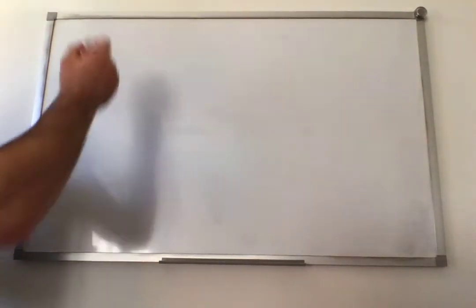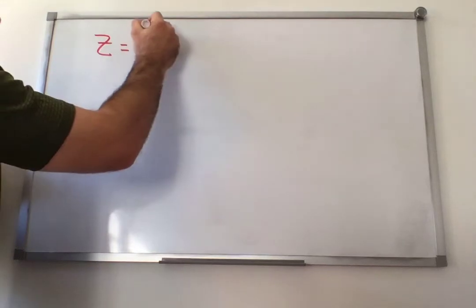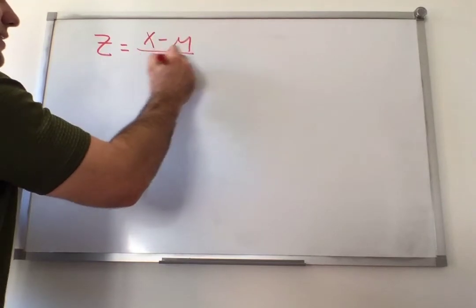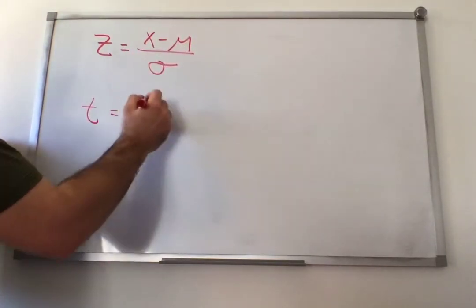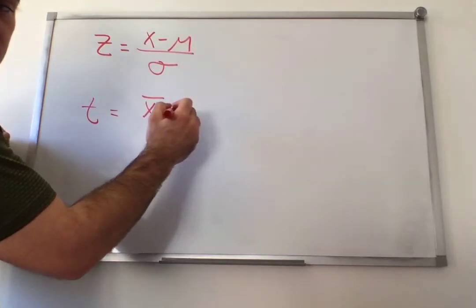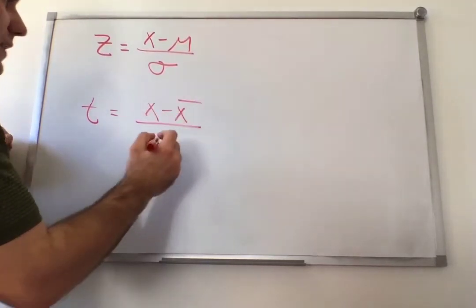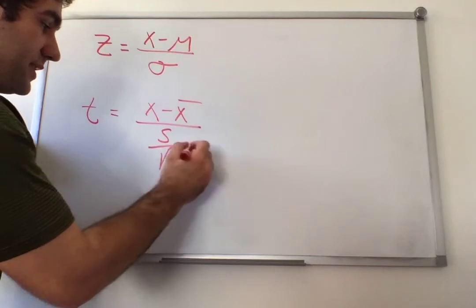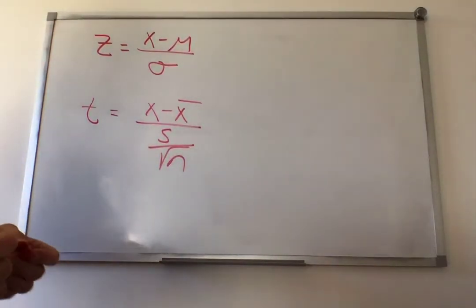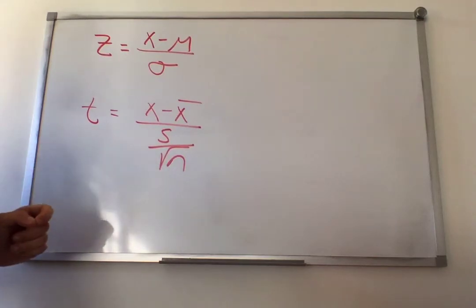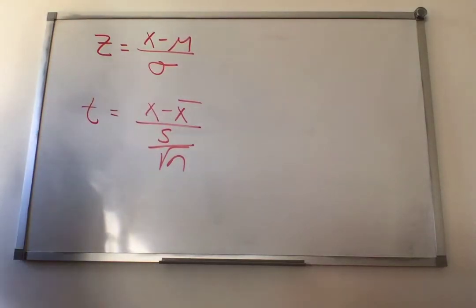The z-score formula was x minus mu divided by sigma. For t-scores, it's x minus x-bar divided by s — that's the sample standard deviation — divided by the square root of n. This has the same interpretation: it tells you how many standard deviations you are away from the mean. This number could be positive or negative.